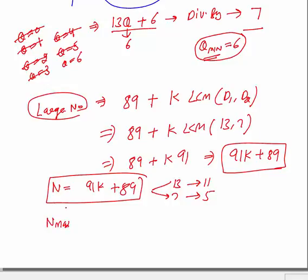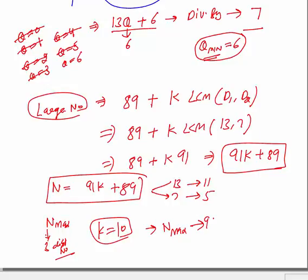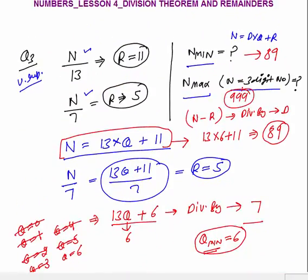To find the maximum 3-digit number: N equals 91k plus 89. Trying k equals 10: 910 plus 89 equals 999, which is the largest 3-digit number. So the maximum 3-digit number satisfying both conditions is 999. These kinds of questions are explained in the most difficult way in books, but the concept is simple — you don't have to memorize anything. That was all about Numbers Lesson 4: Division Theorem, its application, and how to find remainders. Thank you.